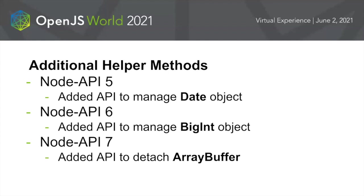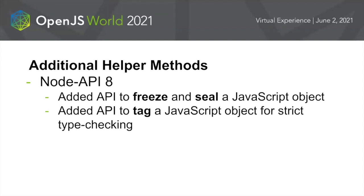Besides multi-threading and context-sensitive add-ons, we also added several convenience methods because they proved very popular. One of them is Date object, which is used extensively in JavaScript and very often gets transferred to the native side. We added BigInt support as it rolled around in the engine, and also rolled it out into our API. We added support for detaching array buffers, which means you promise you will no longer use the array buffer and it turns into a stub object that cannot be used anymore.